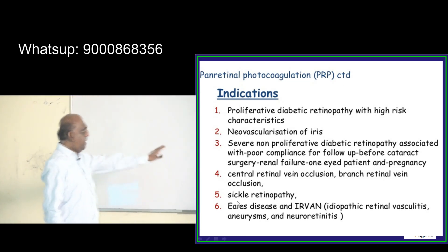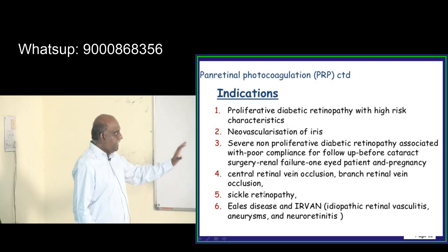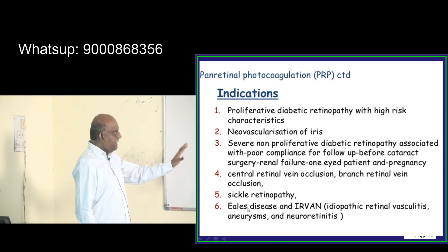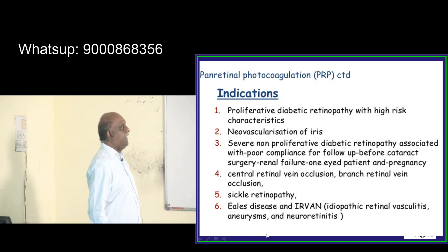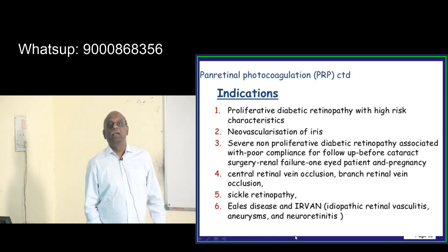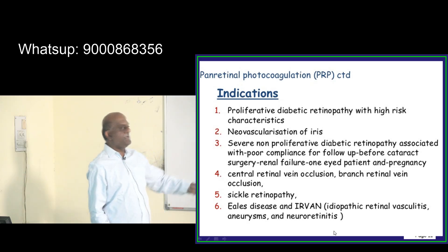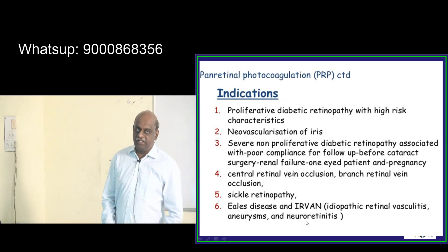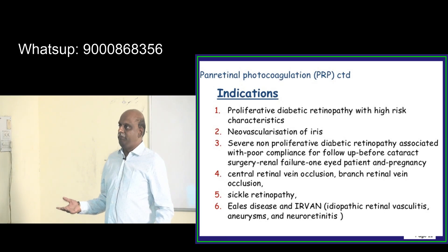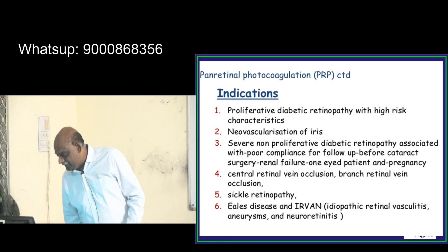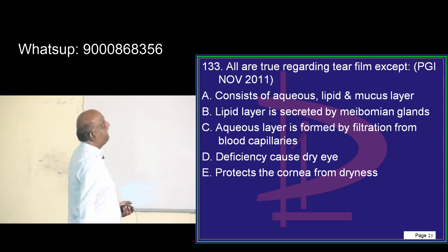Other indications include central retinal vein occlusion, branch retinal vein occlusion, sickle retinopathy, Eales disease, and IRVAN — idiopathic retinal vasculitis, aneurysms, and neuro-retinitis. In all these conditions, you need to use pan-retinal photocoagulation.